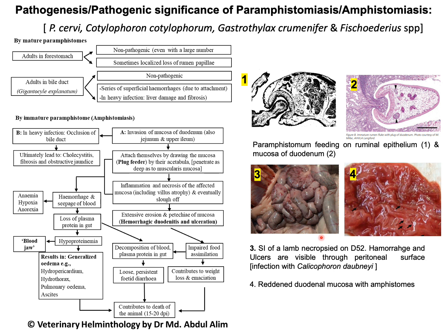Figure number three shows a postmortem of a lamb experimentally infected with one of the paramphistome species. There is severe hemorrhage visible through the peritoneal surface. The last figures include reddening of the duodenal mucosa with a huge number of amphistomes visible.